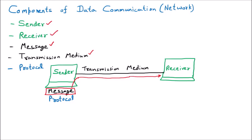The receiver is going to take out that particular message. And we cannot forget the protocol — protocol is very important. Protocols have many rules which both the sender and receiver have to follow. Protocols are the set of rules — rule one, two, three, and so on — defined in networking. The protocol is the agreement between communicating devices.